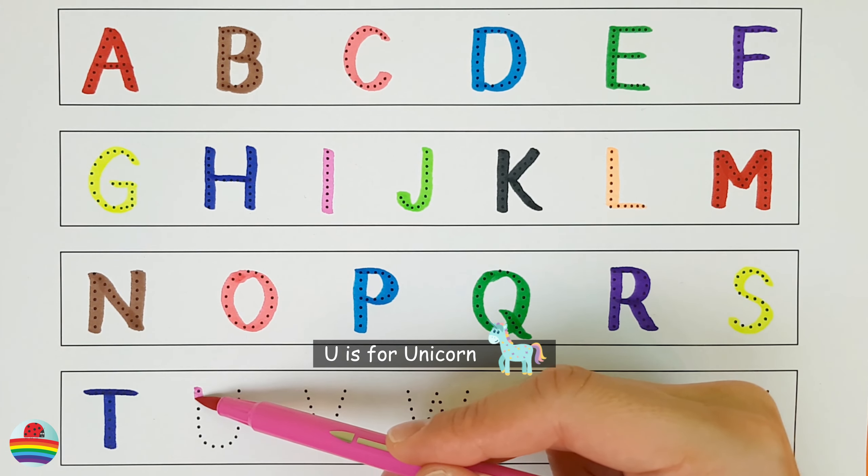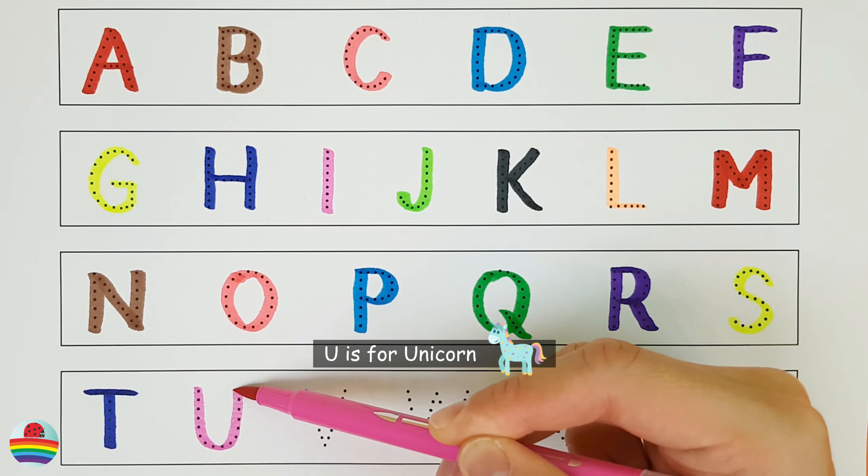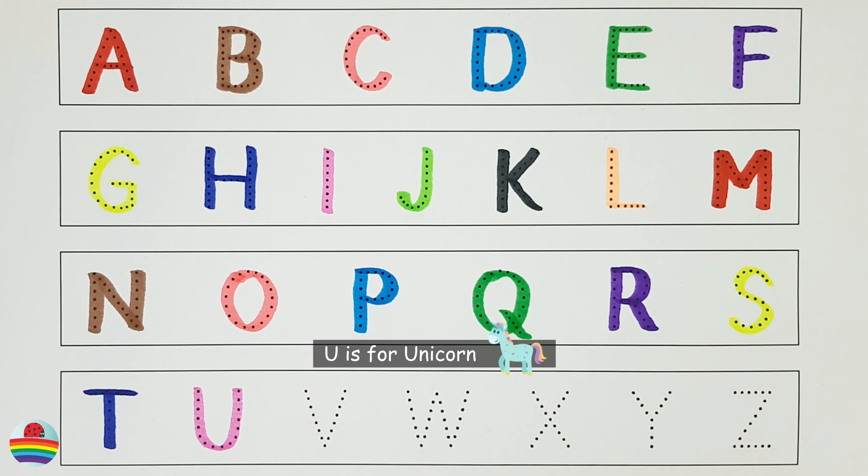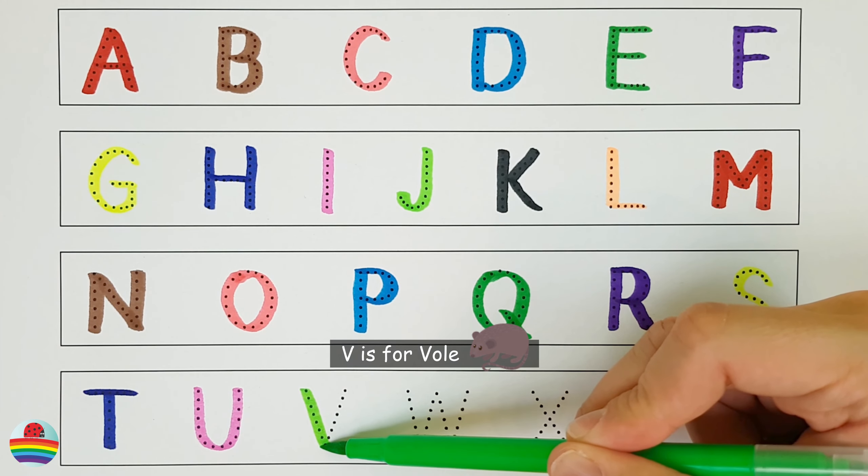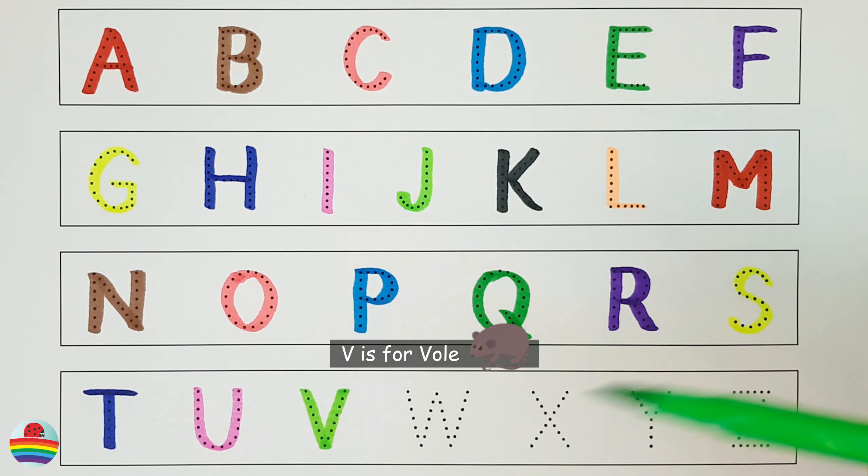U. U is for Unicorn. U. V. V is for Vole. V.